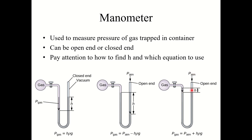If the mercury level is above the line, the gas inside has pushed the mercury higher, meaning the pressure of the gas inside the container is greater than atmospheric pressure — so you add the height value to atmospheric pressure. If the mercury level is below that line, the atmosphere is winning, meaning atmospheric pressure is greater than the gas pressure inside the container — so you subtract this height from atmospheric pressure to find the gas pressure.